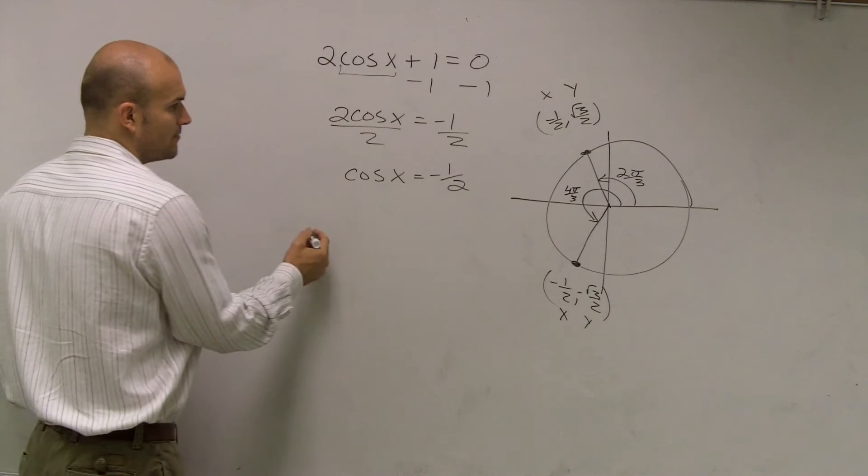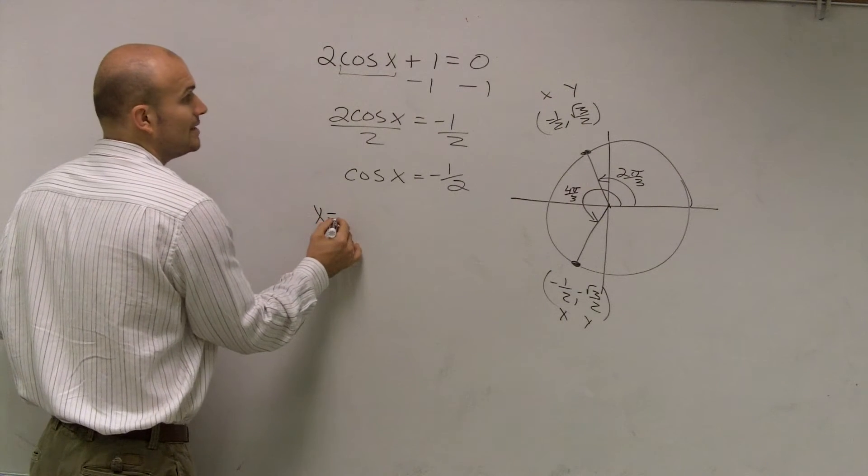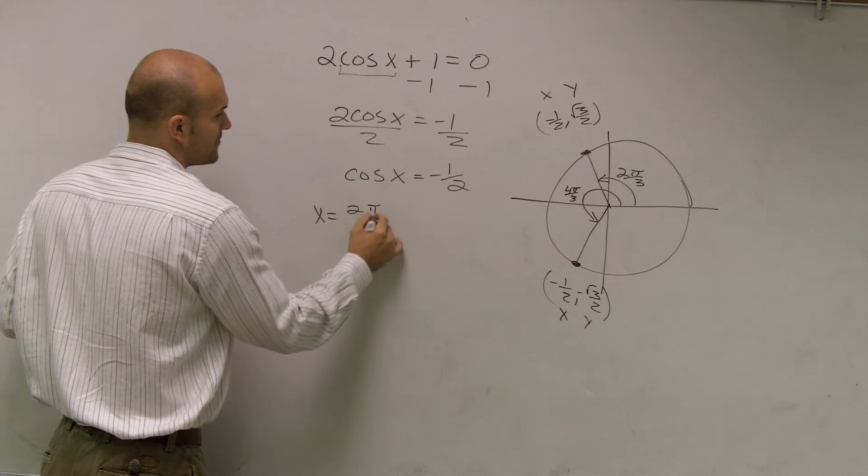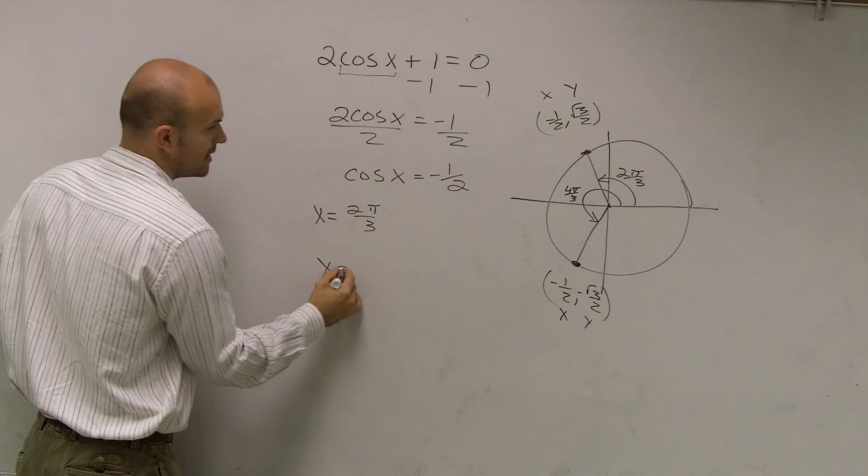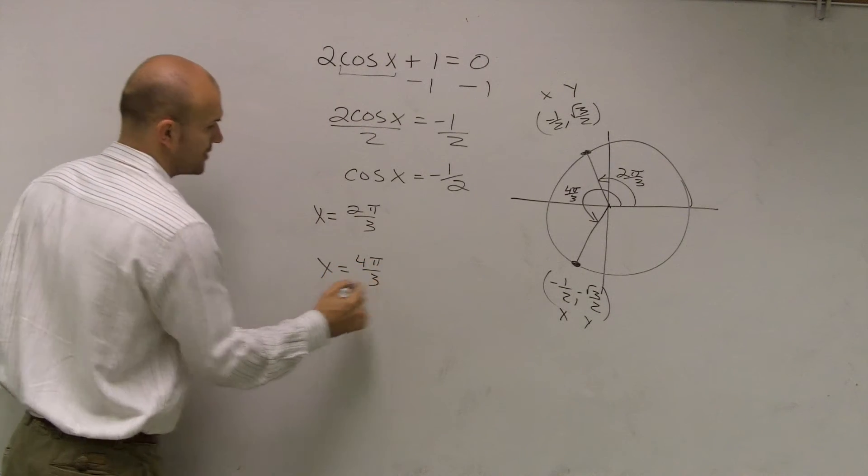So I can say now that x equals 2 pi over 3 and x equals 4 pi over 3.